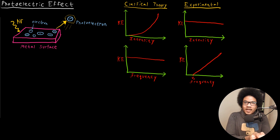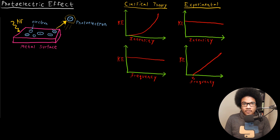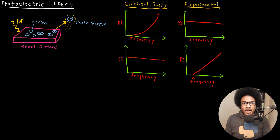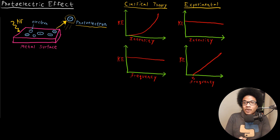So first, let's discuss what is the photoelectric effect. If you take a metal surface with electrons on it and impinge on that metal surface with light — some form of electromagnetic radiation — an electron can be liberated, ejected from that metal surface and have a kinetic energy, a velocity. We call that ejected electron a photoelectron, to denote that a photon came in and impinged on the metal surface and caused the electron to eject.